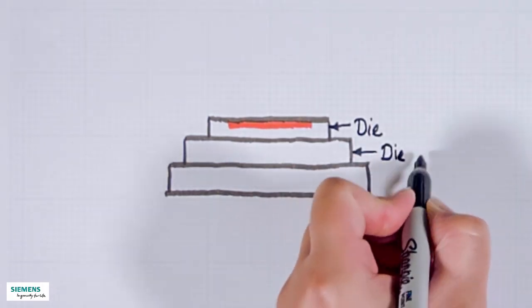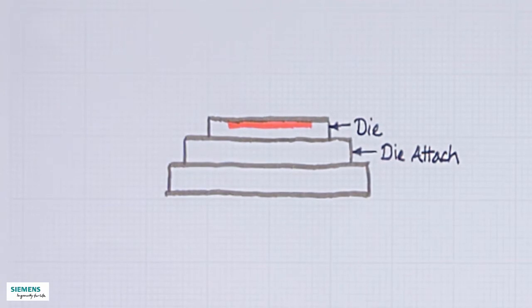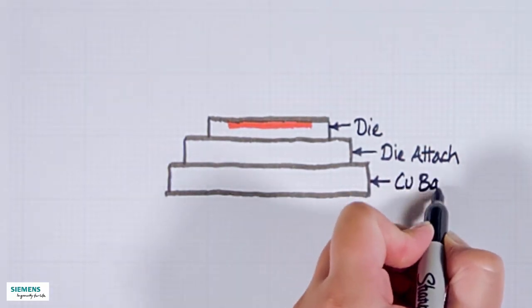Here is the die attach. Die attach is not normally this thick, but I have drawn it like this to make it easier to see. And here we have a copper base.